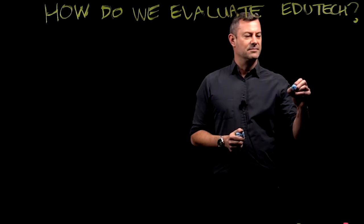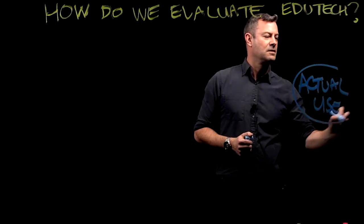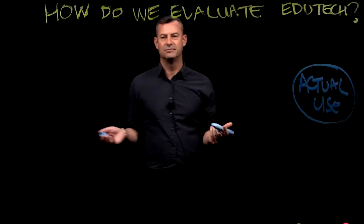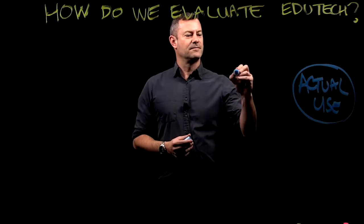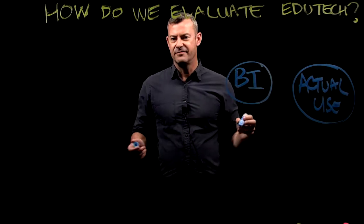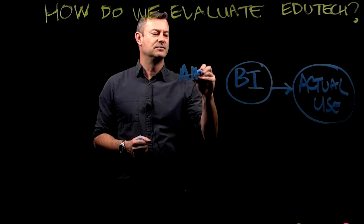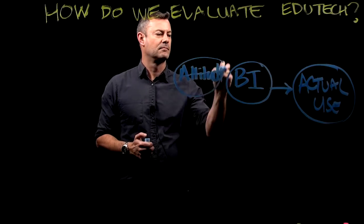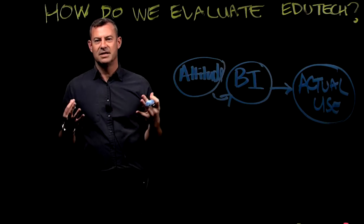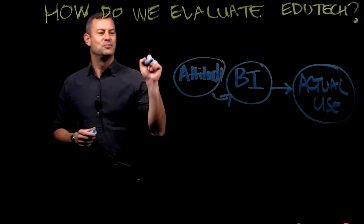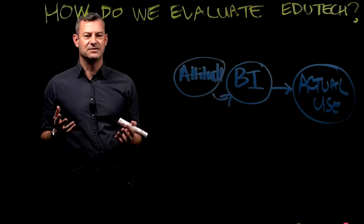Our endpoint is actual use — this is what we want everyone to be able to do with an educational technology. So what are the factors that lead someone to actually use a technology? They have to form a behavioural intention to use it, and that in turn is influenced by their attitude: what they think of the technology, if they like it, the general impression, and from there they'll form the intention and then go on to use it.